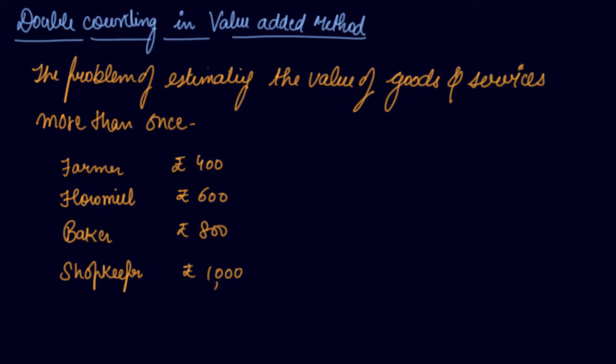Now, what the value addition method says is that whatever is the value of contribution by each sector, you add that. In this way you have 400 plus 600 plus 800 plus 1000, which equals Rs. 2800, your GDP at market price according to this method.